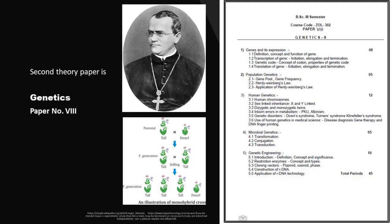Your second theory paper is Genetics with paper number 8. This paper includes Genes and Expression, Population Genetics, Human Genetics, Microbial Genetics and Genetic Engineering. The photograph in this slide is of Gregor Johann Mendel, an Austrian monk also known as the father of modern genetics.